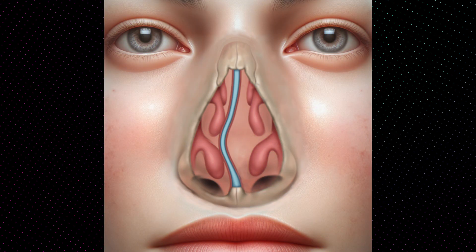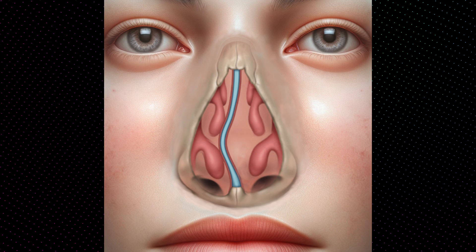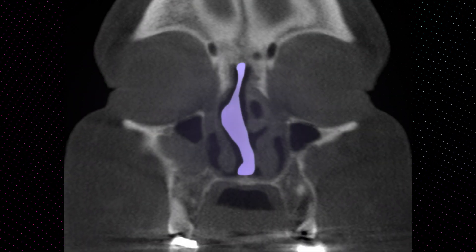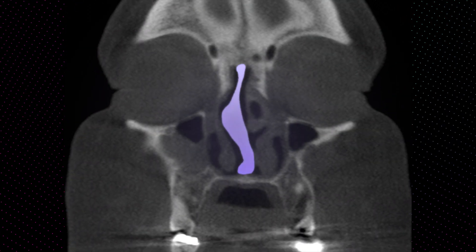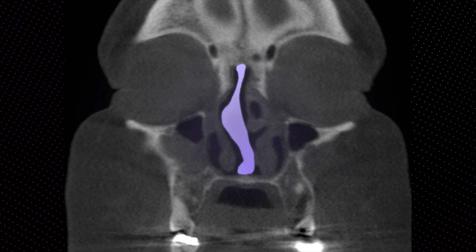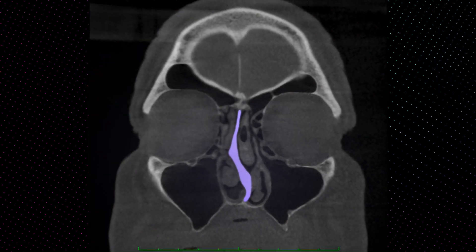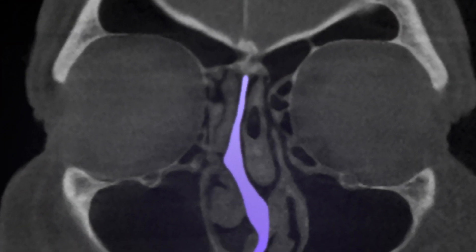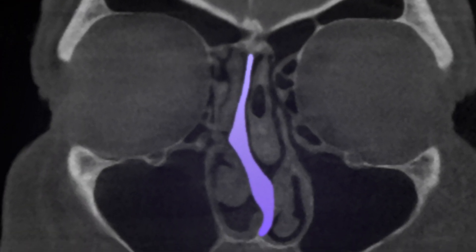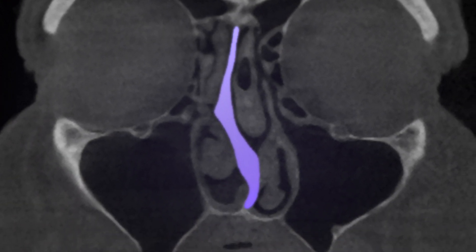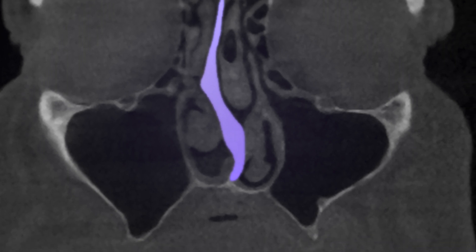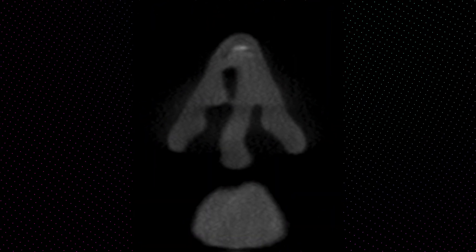Most septal deviations only impact one side of the nose, but a smaller percentage deviate to both sides, forming an S shape. This can impair nasal breathing on both sides to varying degrees. Even a slight narrowing at the wrong location within the nasal airway, such as the valve, may significantly increase airflow resistance and be felt as an obstruction.